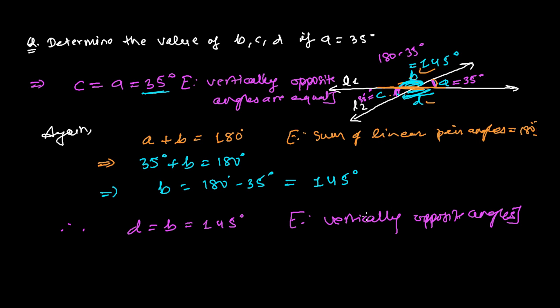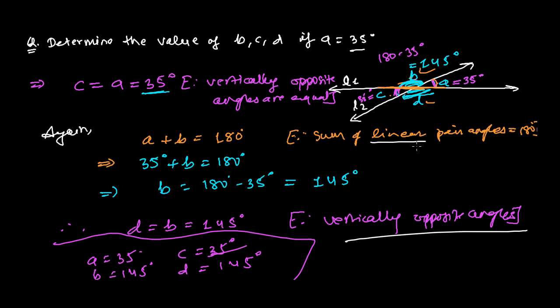This is how we find out the value of a, b, c, and d. We got a that was given as 35, we found b is 145, c is 35 degrees, and d is 145. This is all the information we found from the given value using the concept of vertically opposite angles and linear pairs. See you in the next video with the next concept. Goodbye.